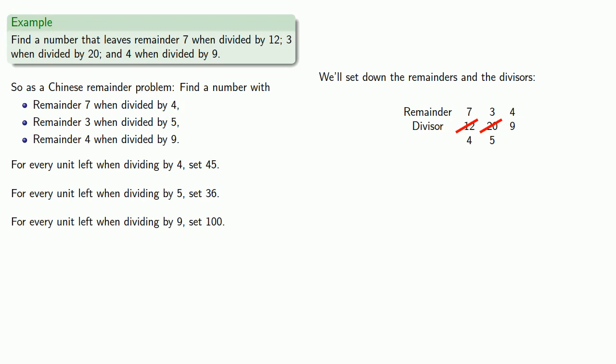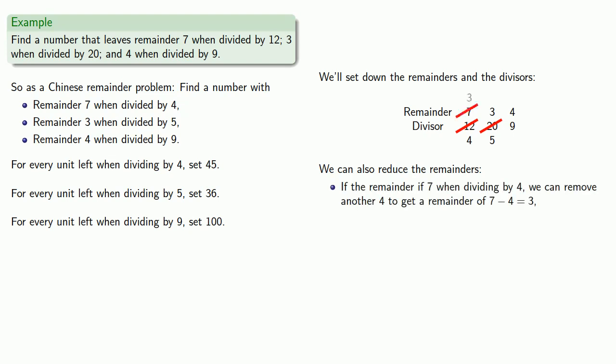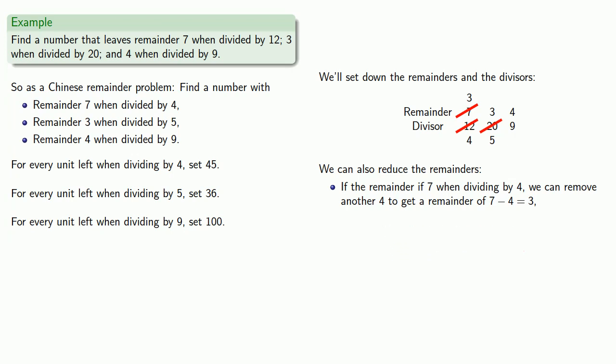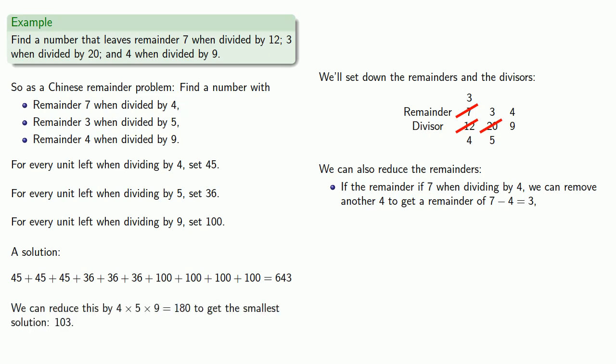That's what we get without reducing the remainders. But we could also reduce the remainders. If our remainder is 7 when dividing by 4, we can remove another 4 to get a remainder of 7 minus 4, or 3. The other two remainders stay the same. So we could instead put down 3 forty-fives, then 3 thirty-sixes, and 4 hundreds to get another solution: 643. Reducing by 180, our smallest solution is again 103.